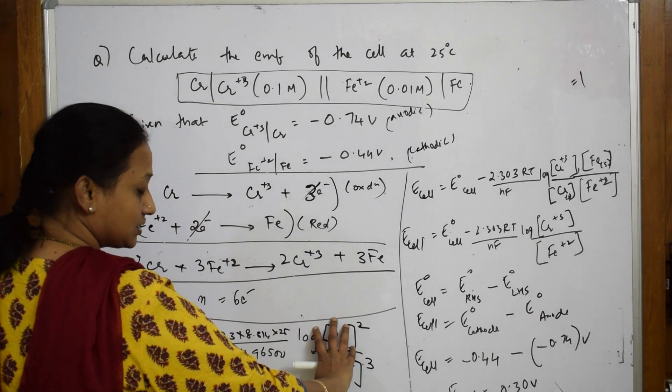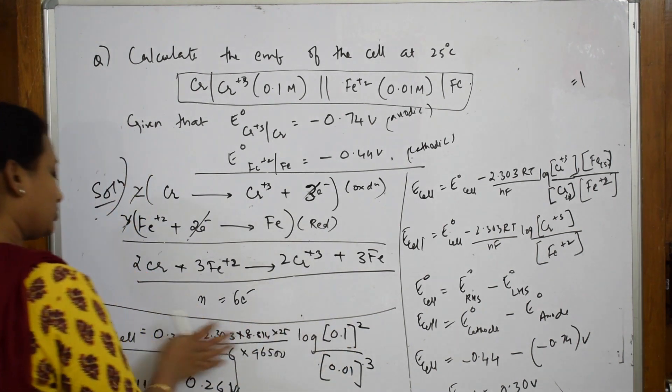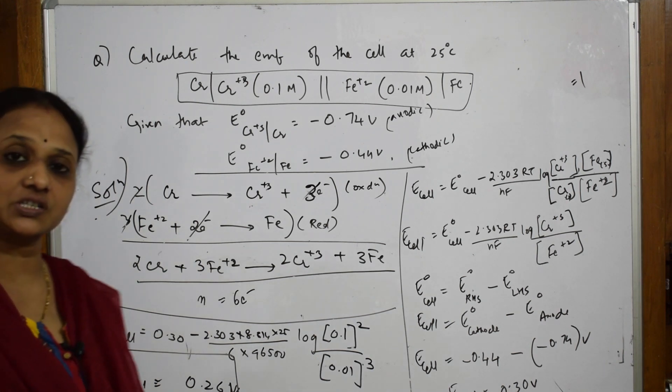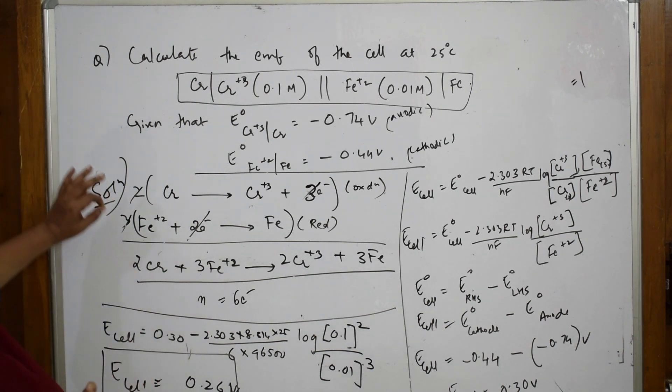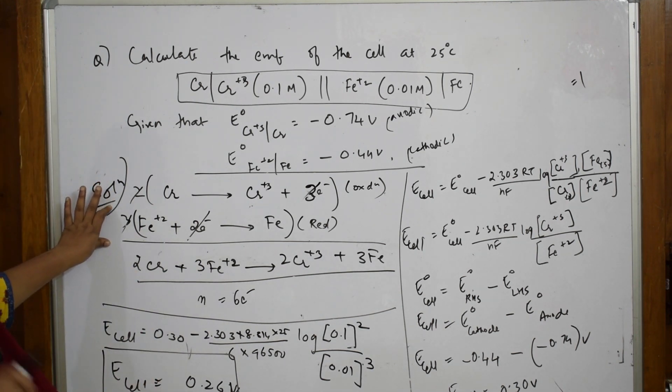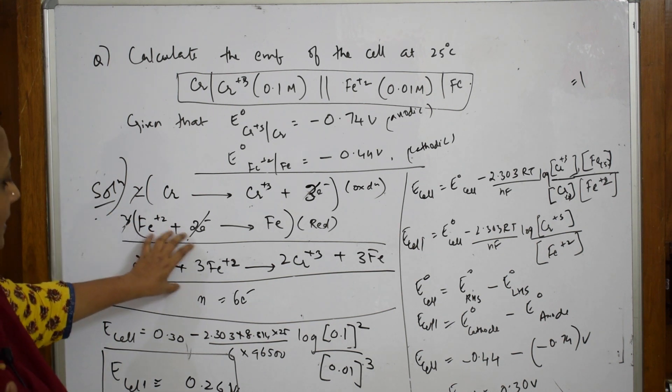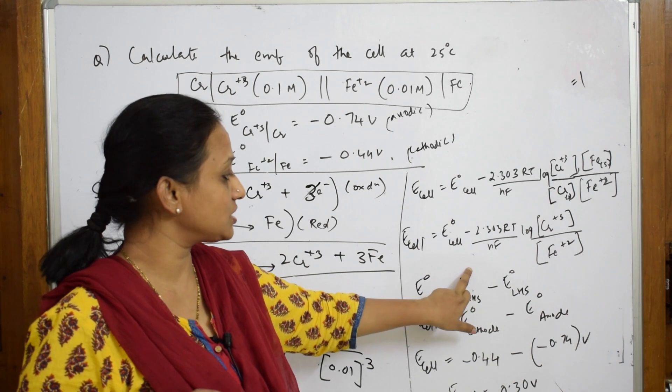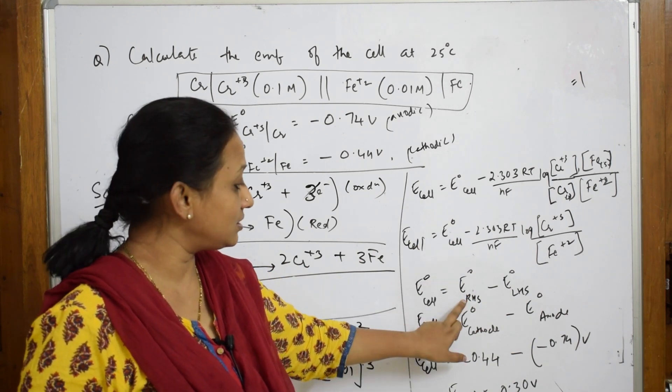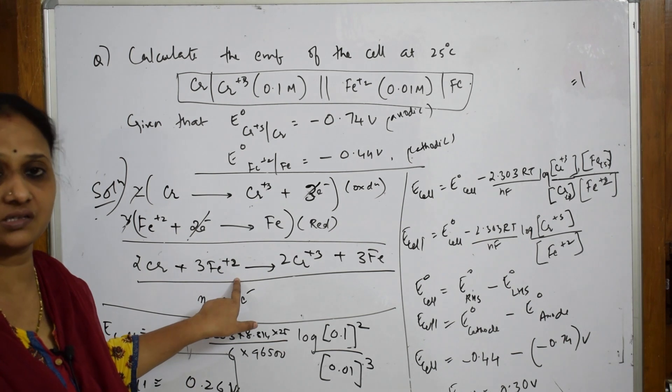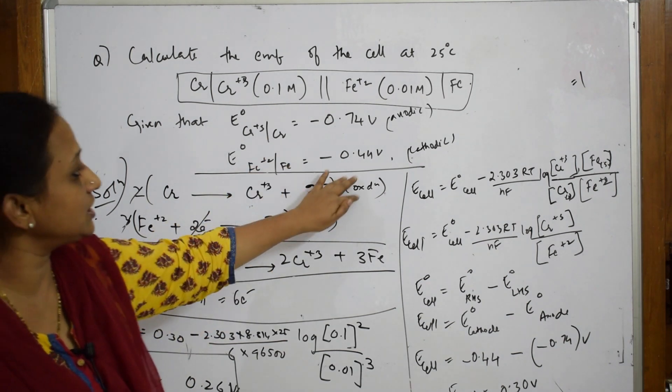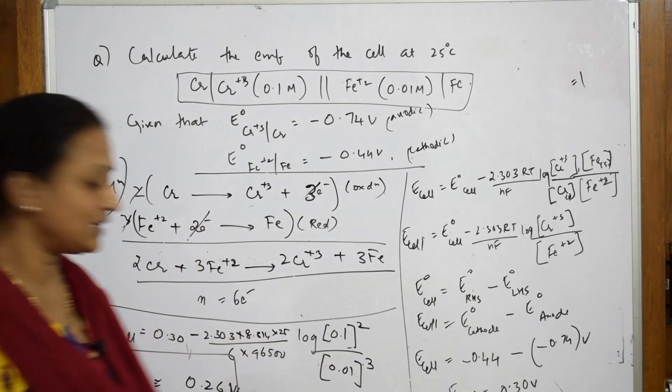First, writing the cell notation reaction is very important. After finding n, write the Nernst equation. You can only calculate E°_cell by writing the half-reactions to identify which is anodic and cathodic. Substitute the values and finally get the answer.